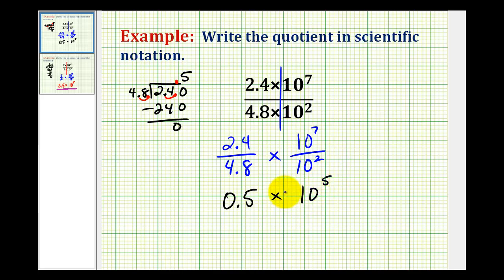So while this is the quotient, we need to recognize that the significant or mantissa here is not in the correct form. This number here has to be greater than or equal to one and less than ten. So it's too small.